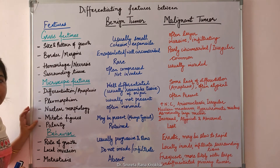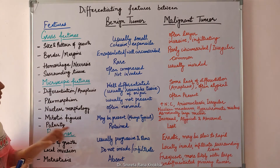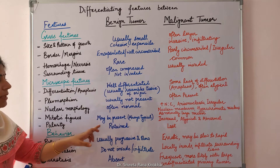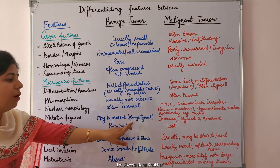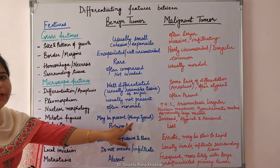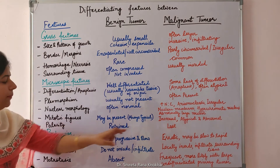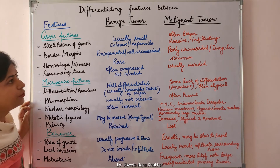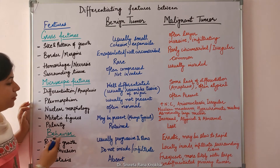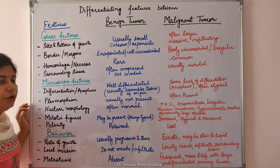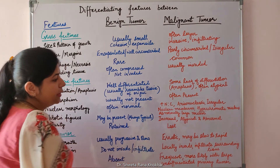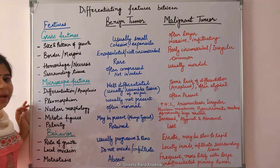Mitotic figures: in benign tumors they may be present, but they are always typical mitosis. Whereas in malignant tumors, the mitotic figures are numerous and increased, and they are atypical and abnormal.